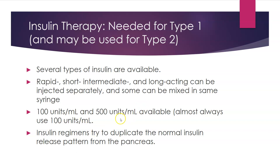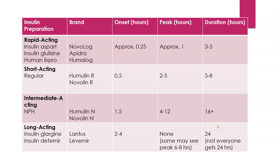We try to duplicate the normal insulin release pattern from the pancreas as close as possible, but of course we're never going to be exactly the same. Looking at some rapid acting insulins, such as Novolog or Humalog, onset is pretty quick — about 15 minutes — peaks in about an hour, and has a duration of three to five hours.